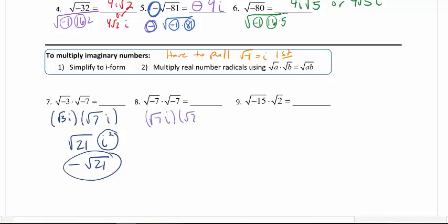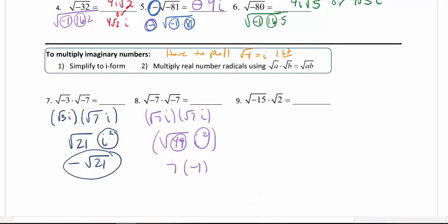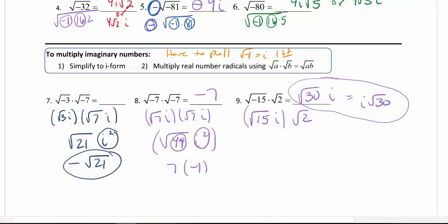For number 8, this gives me square root of 7i times square root of 7i. Combining what's underneath — now that they're real numbers — I get an i squared, which gives me negative 1. Square root of 49 gives me 7, so my answer is negative 7. Don't skip steps — it's very easy to do something wrong in your head. Going to number 9, I can pull out an i and now multiply my real numbers together. I have square root of 30 times i. There's no i squared to deal with, so that is my answer. Standard form puts the i at the end.